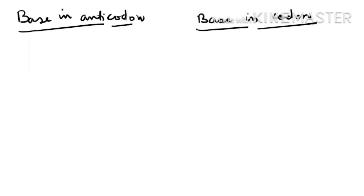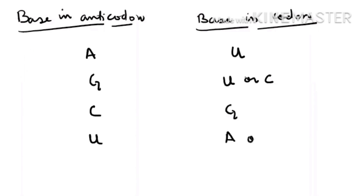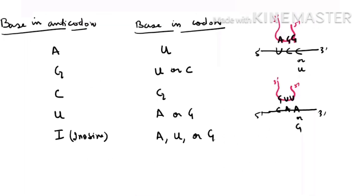Now, which base in the anticodon can read which base of the codon at the wobble position? If the base in the anticodon is A, it can read U in the codon. If the base is G, it can read both U and C. If C is present, it can read only G. If U is present, it can read both A and G. There is also an unusual base in transfer RNA called Inosine (I), which can read A, U, and G. So if C in the codon is substituted with U, the anticodon G can still read it at the third position — G in the anticodon can read C or U.